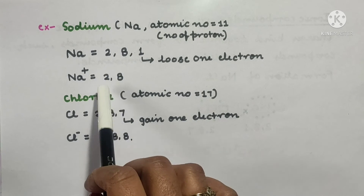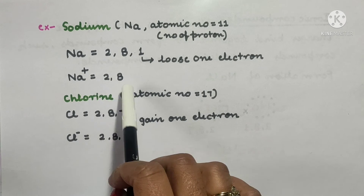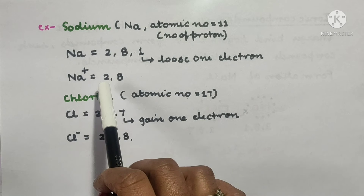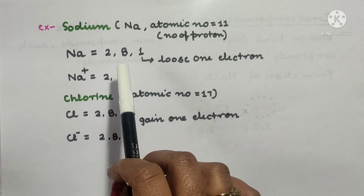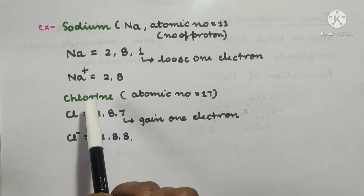So sodium loses 1 electron to gain stability, and its stable electronic configuration becomes 2, 8. When it loses that 1 electron, it becomes positively charged — Na+.